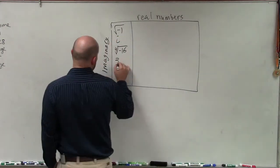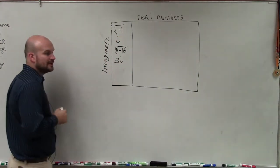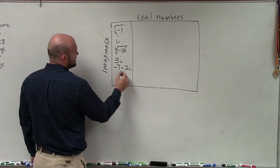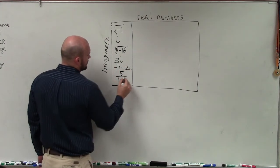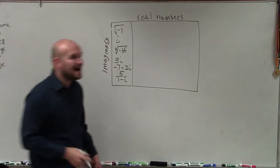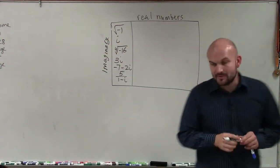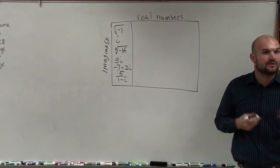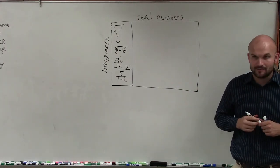You can also have different types of imaginary numbers. You can have it like 3i. You can have negative 7 minus 2i. You could have it as a rational. It doesn't really matter. Any time you guys see i, you know it's going to be an imaginary number. And any time you see the even root of a negative number, it's going to be imaginary.